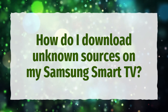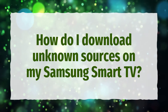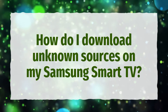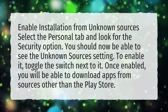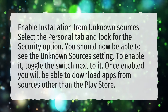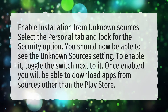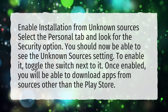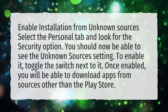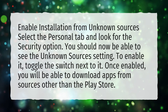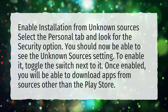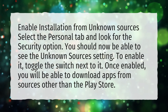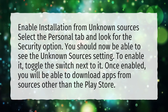How do I download unknown sources on my Samsung Smart TV? To enable installation from unknown sources, select the Personal tab and look for the Security option. You should now be able to see the Unknown Sources setting. To enable it, toggle the switch next to it. Once enabled, you will be able to download apps from sources other than the Play Store.